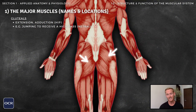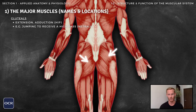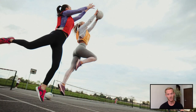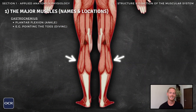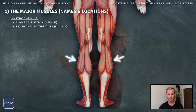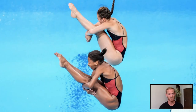The gluteals both abduct and adduct the leg at the hip, but their main role is to create extension, or a straightening of the joint. For example, the gluteals straighten the hip when jumping to receive a high pass in netball. The final muscle that you need to know is the gastrocnemius, or calf muscle, which helps to bend the knee, but most importantly plantar flexes or straightens the ankle joint. For example, a diver uses the gastrocnemius to point their toes for aesthetic purposes in flight.